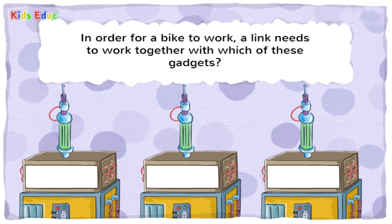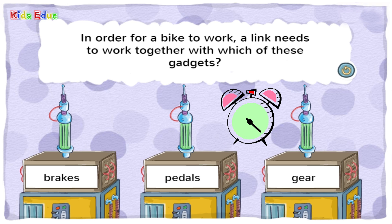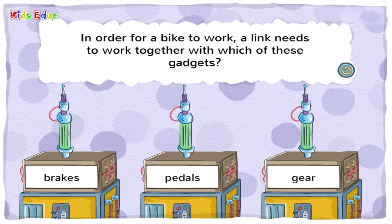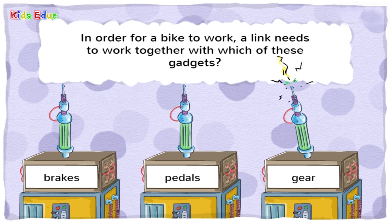In order for a bike to work, a link needs to work together with which of these gadgets? Brakes. Pedals. Gear. — Gear. That's right! A gear is a part of a machine that makes another part move.